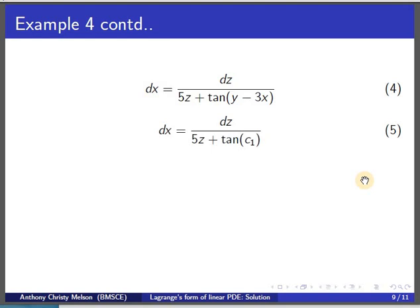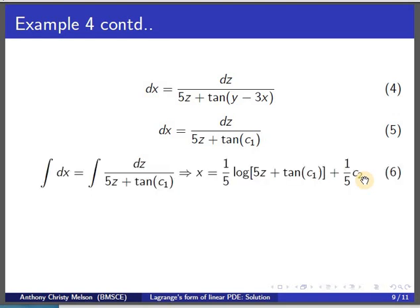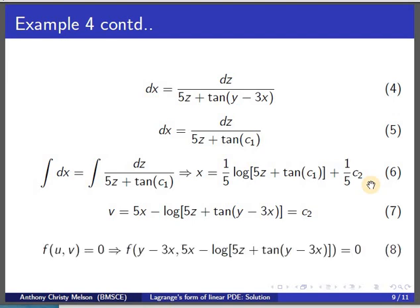We make use of the first solution, that is y minus 3x equal to c1, and substitute it in the equation. As seen in equation 5, y has been eliminated by this substitution, giving a variable separable form which can be integrated to get x equal to (1/5)·log(5z + tan(c1)) + (1/5)·c2. This simplifies to v equal to 5x minus log(5z + tan(y − 3x)) equal to c2. One must note that c1 cannot be left in the equation — it must be substituted, giving only one arbitrary constant in the final result.